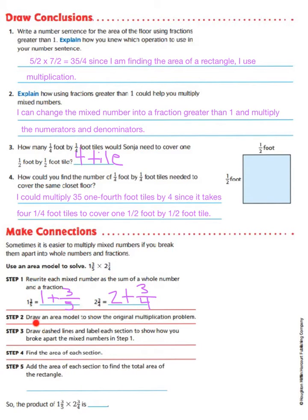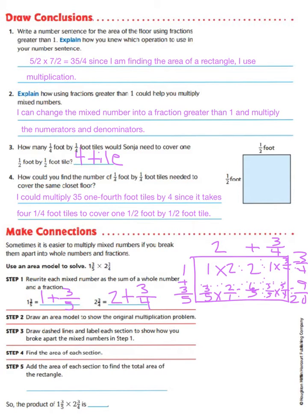Now, step two is to draw an area model to show the original multiplication problem. So, over here on the side, we're going to draw our area model. Okay, so we've drawn our model over here. We have split our rectangle to show our whole number 2 and our whole number 1 here, and then we've split down this way to show our 1 times 3/4 over here. We also have our dotted line going this way to show our 3/5 fraction down here times 2, our whole number, and over here to show our 3/5 fraction times our 3/4 fraction.